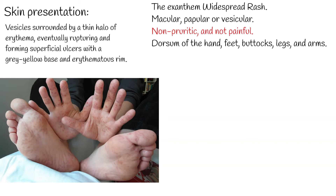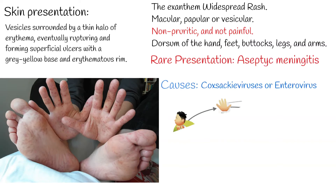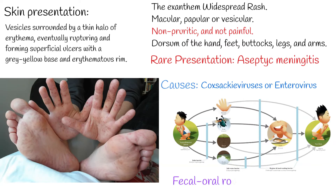Hand, foot, and mouth disease can also present with atypical features like concomitant aseptic meningitis. The disease is caused by coxsackieviruses or enterovirus, which are transmitted by the fecal-oral route. Coxsackieviruses can also cause viral meningitis, but such cases are rare.